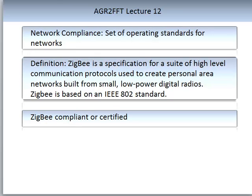One set of standards enabling quality in network communication is Zigbee compliance — a suite of operating standards for networks. Zigbee is a specification for a suite of high-level communication protocols used to create personal area networks built from small, low-powered digital radios, based on the IEEE 802 standard. IEEE standards are another area to check to confirm that your network components are compliant. Low-powered Zigbee devices often transmit data over long distances by passing through intermediate devices, creating what is called a meshed network.